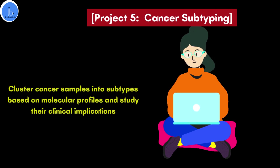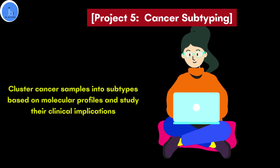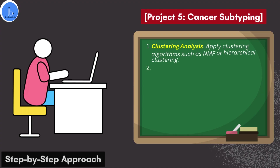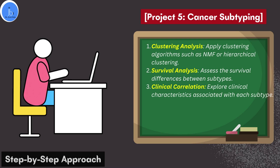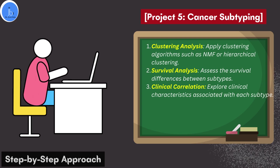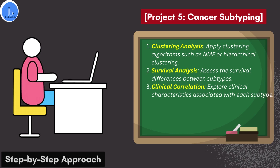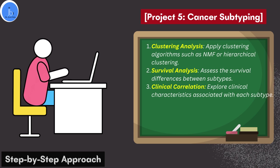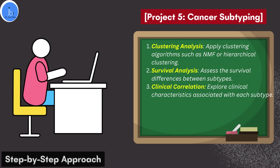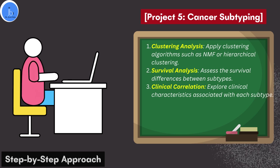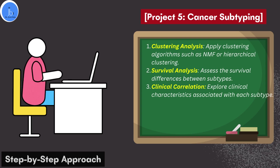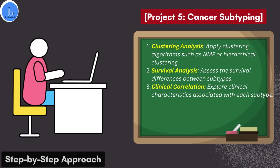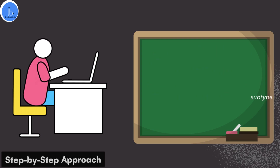The next project is cancer subtyping — cluster cancer samples into subtypes based on molecular profiles and study their clinical implications. This can be achieved by applying clustering algorithms such as NMF or hierarchical clustering. After cluster analysis, you can perform survival analysis to assess survival differences between subtypes, and then derive clinical correlations by exploring the clinical characteristics associated with each subtype.